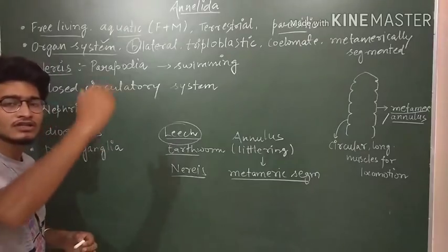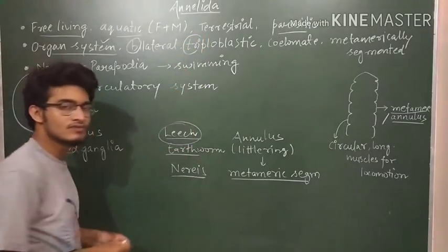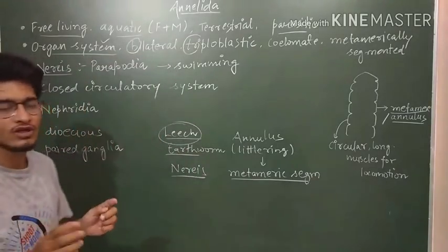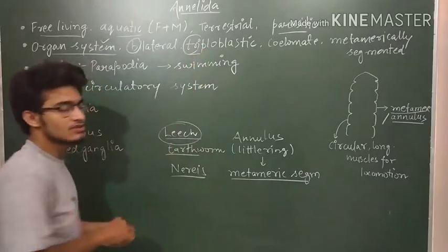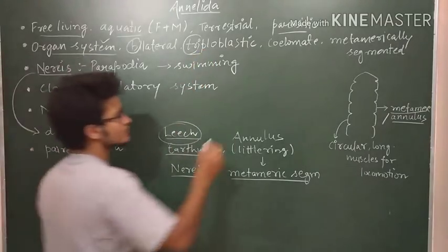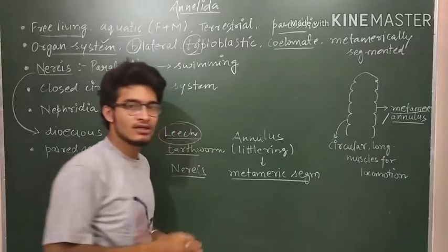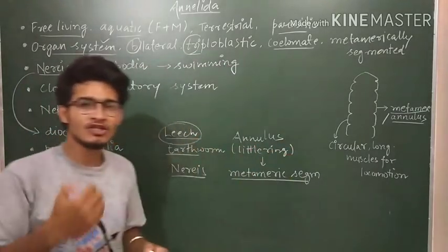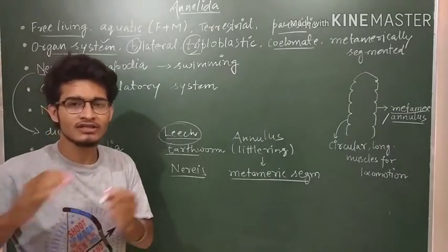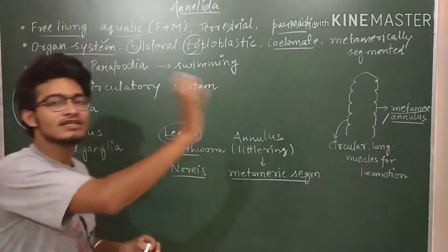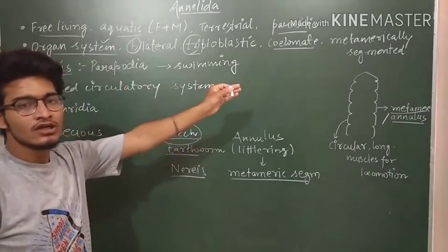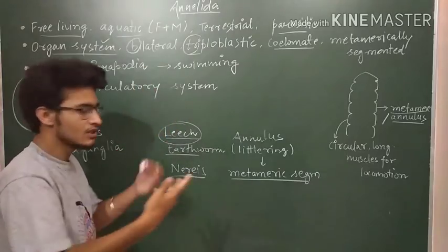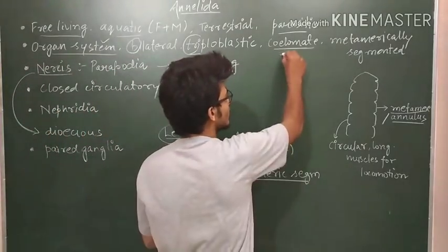Platyhelminthes and rest of the animals are triploblastic. So the diploblastic animals are Porifera, Coelenterata and Ctenophora. Triploblastic means three germ layers: ectoderm, mesoderm, endoderm. They are coelomate. Only Aschelminthes is pseudocoelomate, that is having false coelom. Before Aschelminthes all the phyla are acoelomate, not having coelom. And after Aschelminthes all the phyla are having true coelom which is lined by mesoderm. So it is coming after Aschelminthes, so it is obviously having true coelom. So it is coelomate.